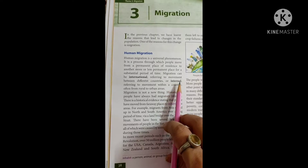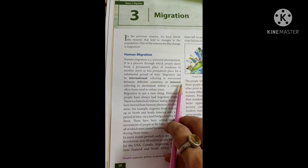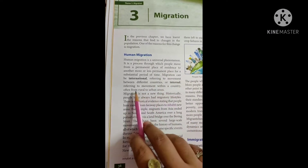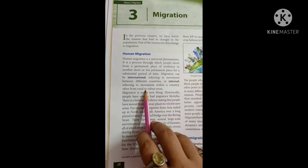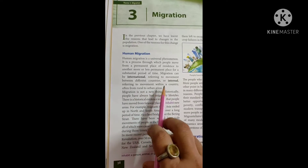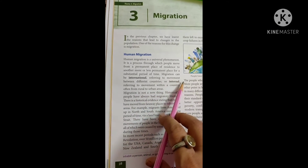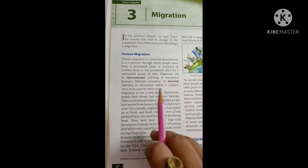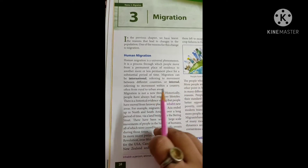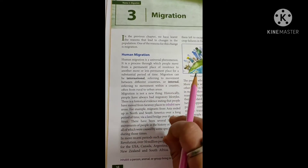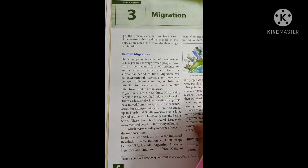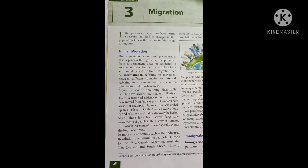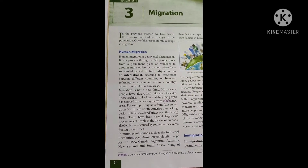It is also called internal migration. Internal migration refers to movement within a country, often from rural to urban areas. When movement happens within one country, between rural areas and urban areas, it is called internal migration.